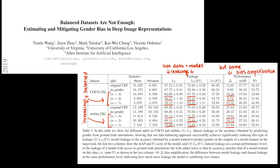In another similar study from 2019, researchers wanted to see if they could reduce bias amplification by balancing their data sets such that each label was applied to each gender the same number of times. Instead, they found that even when they balanced their data sets, the trained model showed just as much bias amplification as the model trained on the unbalanced data set.